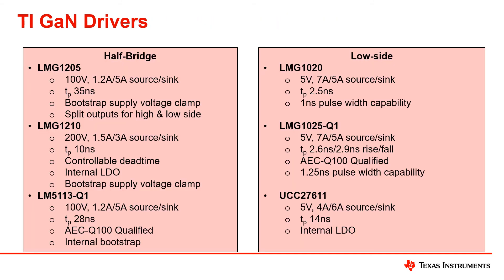In our GAN driver portfolio, we currently have six parts, covering half-bridge and low-side configurations. Each category has one automotive qualified part. Our drivers have fairly low propagation delays with individual features that make each driver different. Some notable features include controllable dead times, bootstrap supply voltage clamps, internal bootstrap components, and an internal LDO for our half-bridge drivers. Similarly, our low-side drivers can feature an internal LDO and nanosecond pulse width capabilities. One driver might be better than the other depending on your application, so it would be best to check which one best fits your requirements.